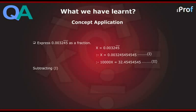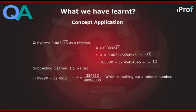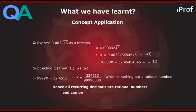Subtracting equation 1 from equation 2, we get 9999x equal to 32.4513. Therefore, x is equal to 324513 divided by 9999000, which is nothing but a rational number in the form P by Q. Hence, all recurring decimals are rational numbers and can be expressed as a fraction P divided by Q, where P and Q are integers and Q is not equal to 0.